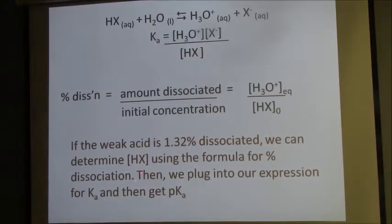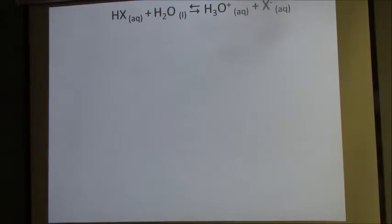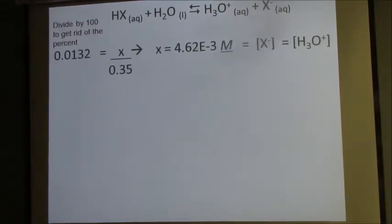The problem tells me it's 1.32% dissociated at equilibrium, so to convert that percent back into a decimal I need to divide by 100. And 0.35 is the initial concentration that was given to me in the problem.